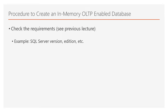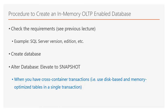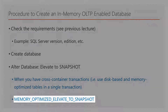Examples of such checks include SQL Server version and edition check. The next step is to create a database and then alter the database in order to elevate to snapshot isolation level. That's because when you have cross-container transactions — for example, you use disk-based and memory-optimized tables in a single transaction — the memory-optimized portion of the transaction needs to operate in the snapshot database isolation level.